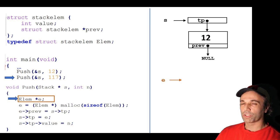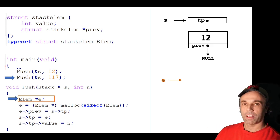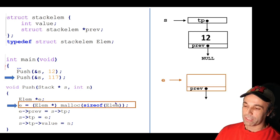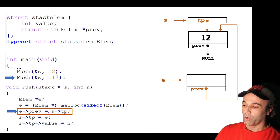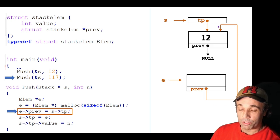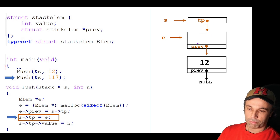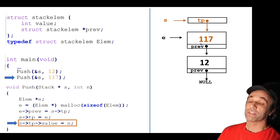Now we make another call to push — we pass it a pointer to S and this time the value 117. We want that to be the new top of the stack. We follow exactly the same process: declare a pointer to an element E, currently not pointing at anything. We allocate memory for a new element and assign that memory location to E — so E is pointing at the new element, currently completely uninitialized. We set E arrow prev to S TP — we're pointing this element's previous pointer to what was the old top, because this is going to be the new top. Then we set S TP to E — S TP is now pointing at E. Finally we copy the value n, which is 117, into the new top: S TP arrow value equals 117.